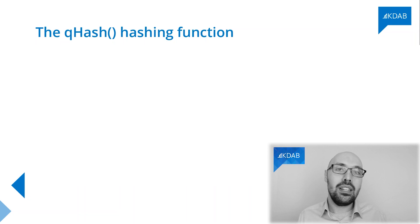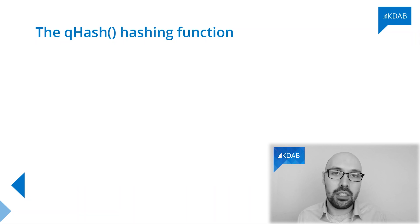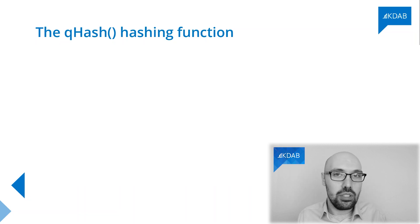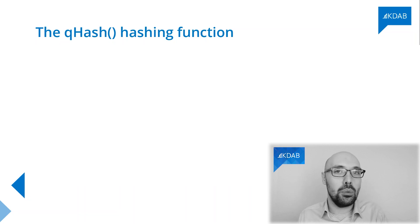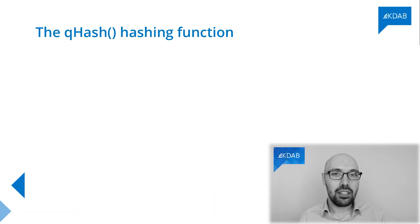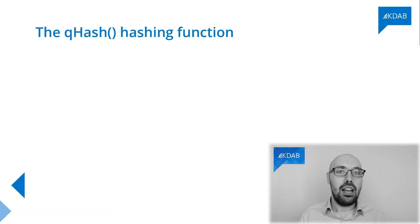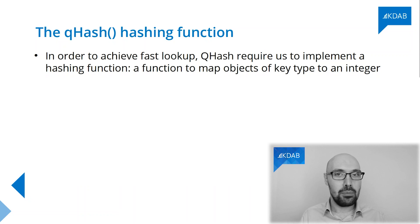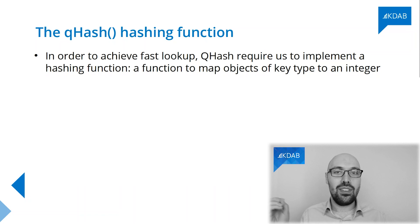There are at least two things you must implement. One is an equality operator — but that's easy. The second thing you must implement is a hashing function: a function that takes instances of your key and returns small integers, and then QHash can use these integers to do this fast lookup operation. In Qt, the hashing function is called qhash — lowercase q, uppercase H — and that's the function responsible for taking objects of your key type, processing them somehow, and turning them into a very small integer, so that QHash (capital Q, capital H, the data structure) can do this very fast lookup.